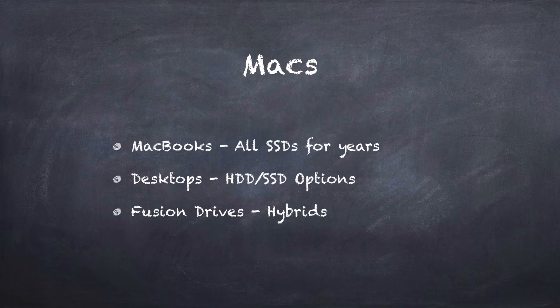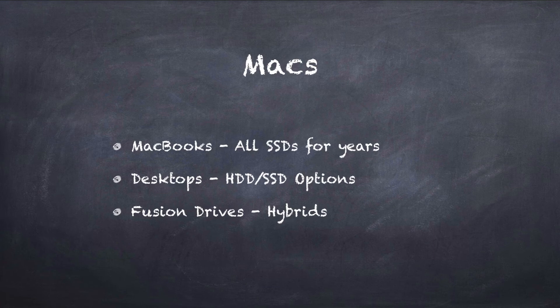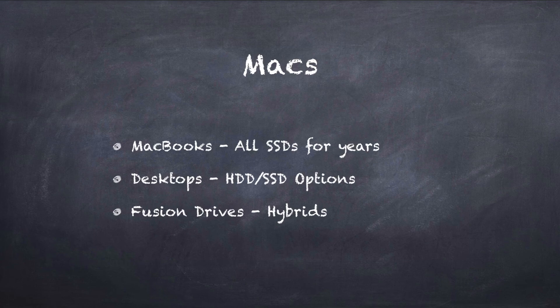All MacBooks now just come with SSDs — that's the only option; there's no option to get a hard drive since they're very thin and light. Even back with the first MacBook Air you could get an SSD. Desktops like the iMac you can still configure with a hard drive or an SSD. There's also a hybrid option Apple offers called a Fusion Drive, which means you get both — an SSD and a hard drive. It uses the SSD for things read often and the hard drive for things stored and not read as often, so software handles it to give you about 90% of SSD performance at a lower cost.